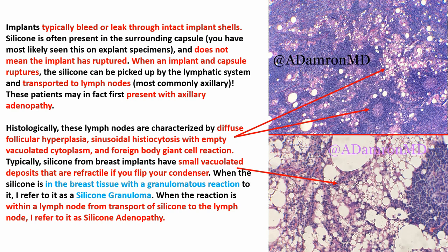Sometimes these will also have a foreign body giant cell reaction. This material doesn't polarize — it's just going to be refractile. That's something you can use to determine that this is indeed silicone. For terminology: when silicone ruptures and you have a granulomatous reaction to it in the breast, I refer to that as a silicone granuloma. When the reaction is within a lymph node from transport of silicone to the lymph node, I personally refer to it as silicone adenopathy. So those are the two diagnoses I use: silicone granuloma versus silicone adenopathy.